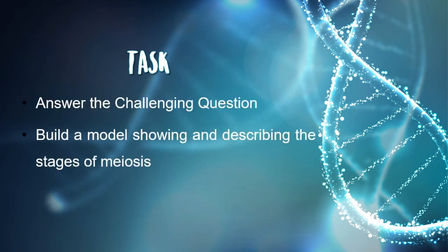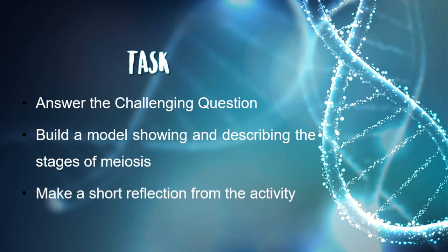The next task given to us is to build a model showing and describing the stages of meiosis. Due to our current situation, we cannot meet up and make one complete model. Instead, we divided the stages between the members, took pictures, and recorded videos as proof that we completed the activity without committing any violation. Lastly, we had to make a short reflection, where each member wrote about what they learned from the activity.